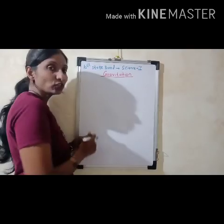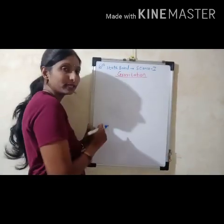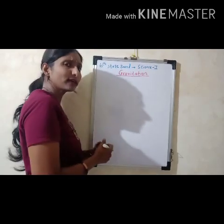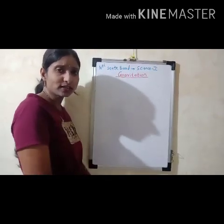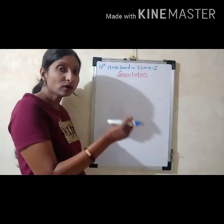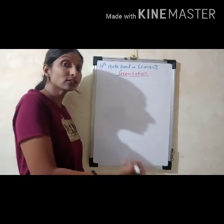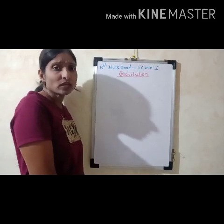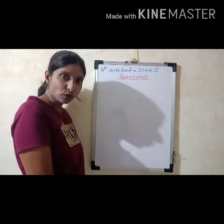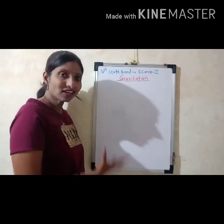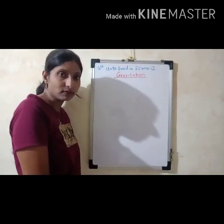The name of the chapter is gravitation. So definitely first we have to understand what you mean by gravitation. Whenever we hear this word gravitation, the first fact which comes in our mind is earth's gravitation. If we throw any object upwards, it will fall back onto the earth because earth has a strong force of attraction, which we know as earth's gravity, that is gravitation.